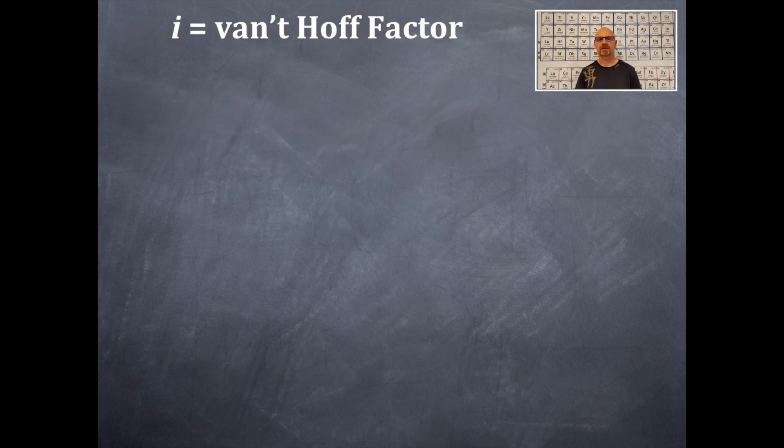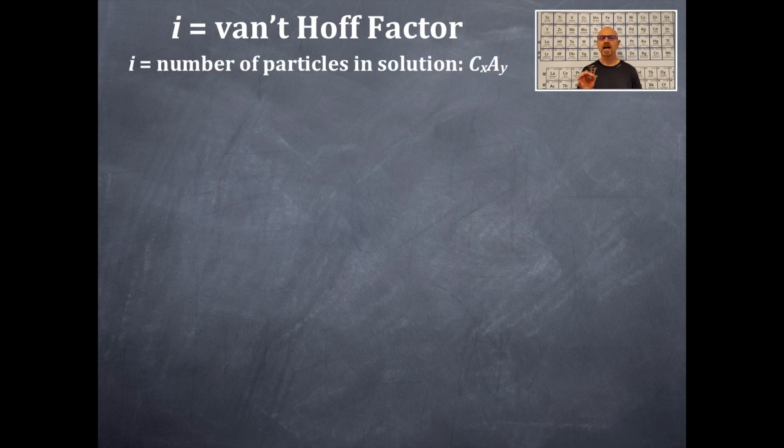i, the van't Hoff factor, is the following. i is the number of particles in solution, that's an aqueous solution in water. See that CₓAᵧ, that's a cation and an anion. We're going to take the x and the y and sum them up, and then we're going to get the number of particles that are in solution, and that's going to be our i value, the van't Hoff factor.